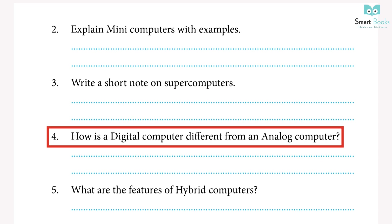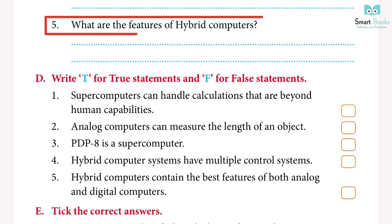4. How is a digital computer different from an analog computer? Digital computers are the most commonly used; they calculate numbers and perform logical operations. Analog computers are used to process continuously changing data; they are used to measure and perform arithmetic calculations such as the length of an object, etc.